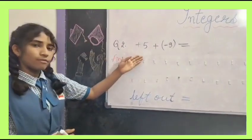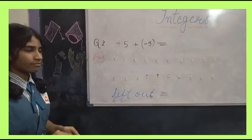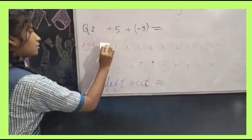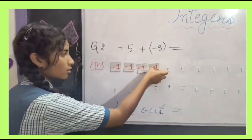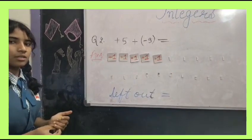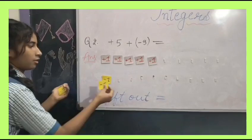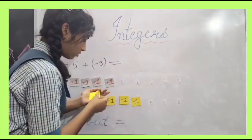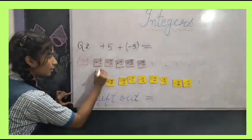We have 5 plus. It has 5 positive squares. So we will paste 5 positive squares. Now we will paste 9 negative squares.